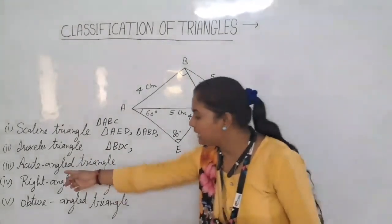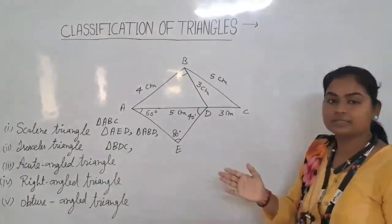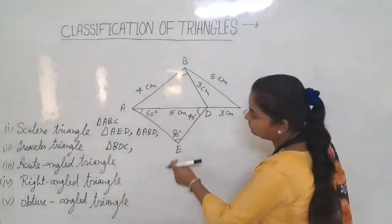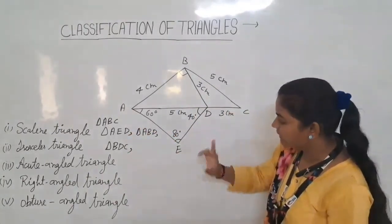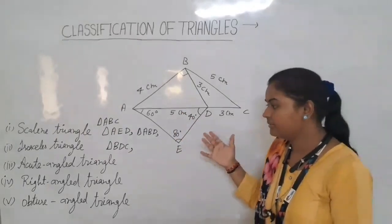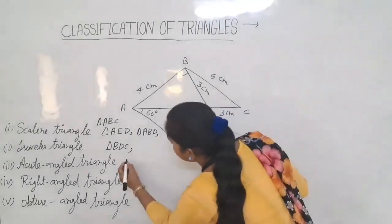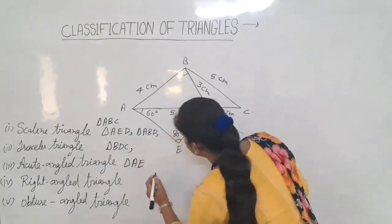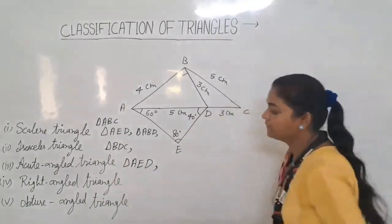Next we have an acute angle triangle — acute means all angles are less than 90 degrees. Check angle ACD: it is 40 degrees — all interior angles are acute, so it is an isosceles and acute angle triangle. Triangle AED is an acute angle triangle.